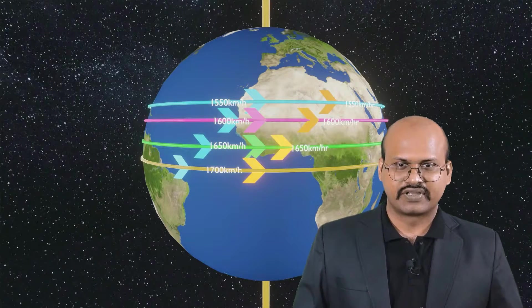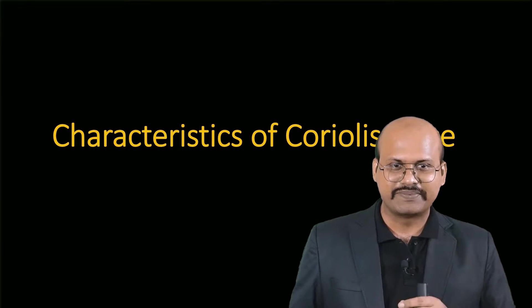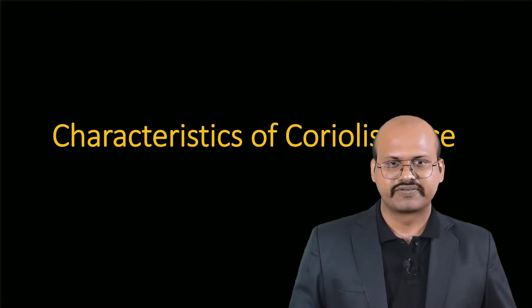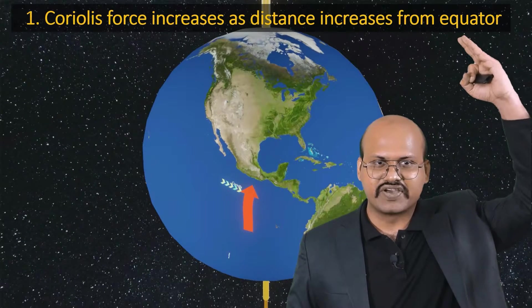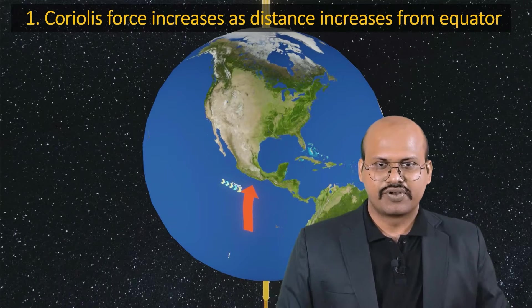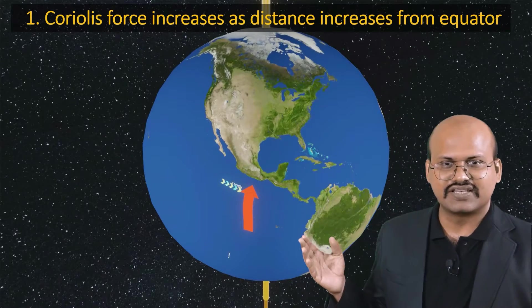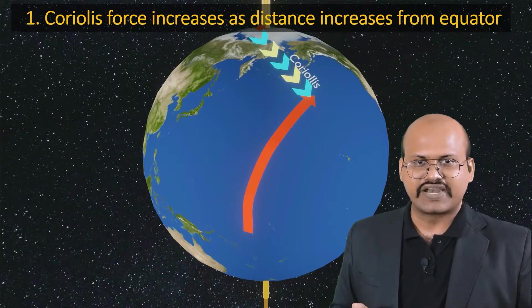Now that we have a basic understanding of how Coriolis force works, let's discuss its major characteristics. The first characteristic is that Coriolis force increases as the distance from the equator increases. At the equator the Coriolis force is minimum — in fact it is zero — but as we move away from the equator the Coriolis force increases. A particle moving away from the equator experiences increasing Coriolis force, while one moving toward the equator experiences decreasing Coriolis force.